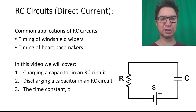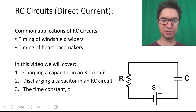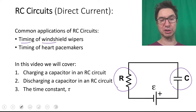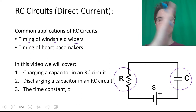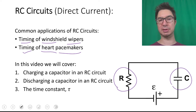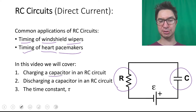Welcome back. In this video we're going to take a look at RC circuits with direct current. An RC circuit is simply a circuit that has both a resistor and a capacitor. Some common applications of RC circuits include timing of windshield wipers — every time you see your windshield wipers go back and forth, that's on a timing circuit determined by the RC circuit — and also heart pacemakers.